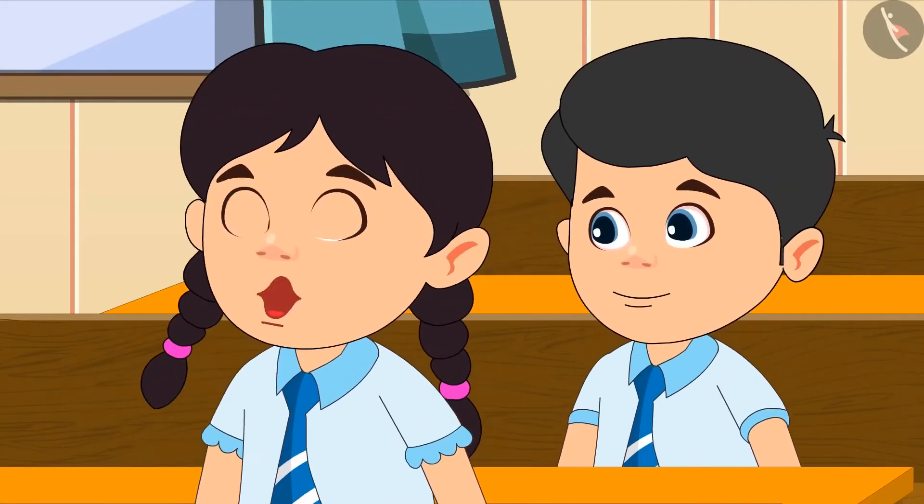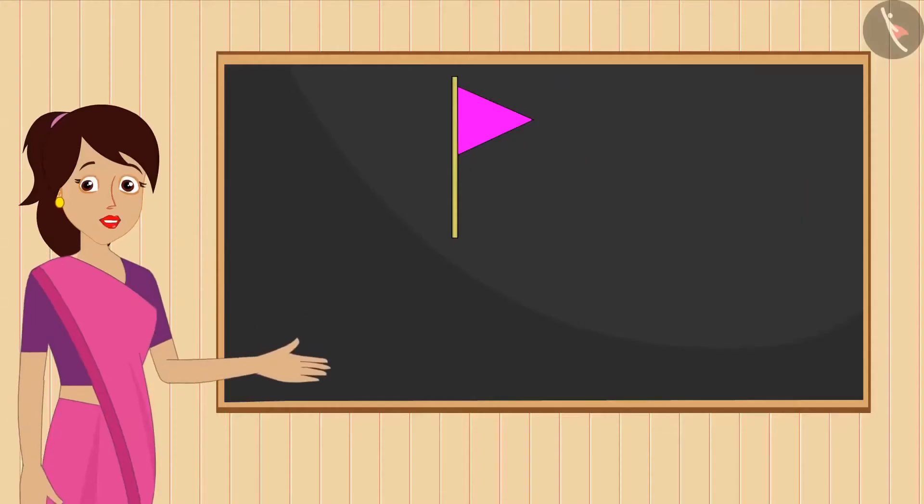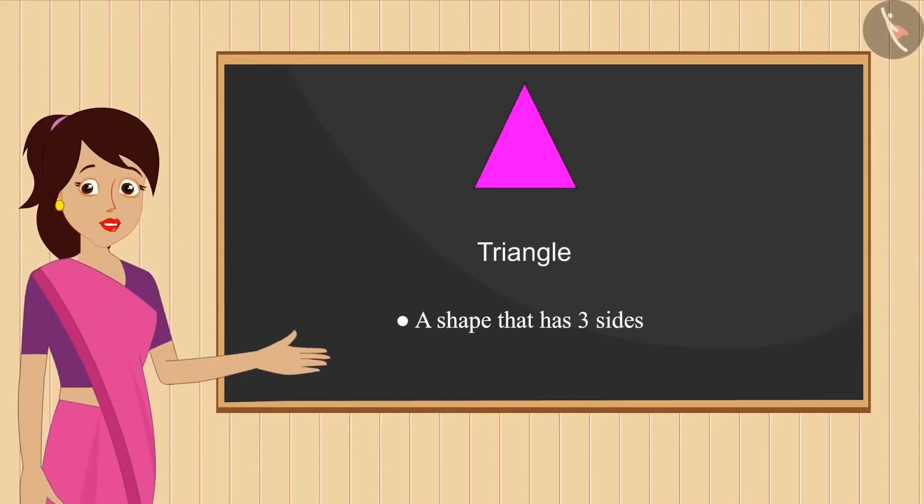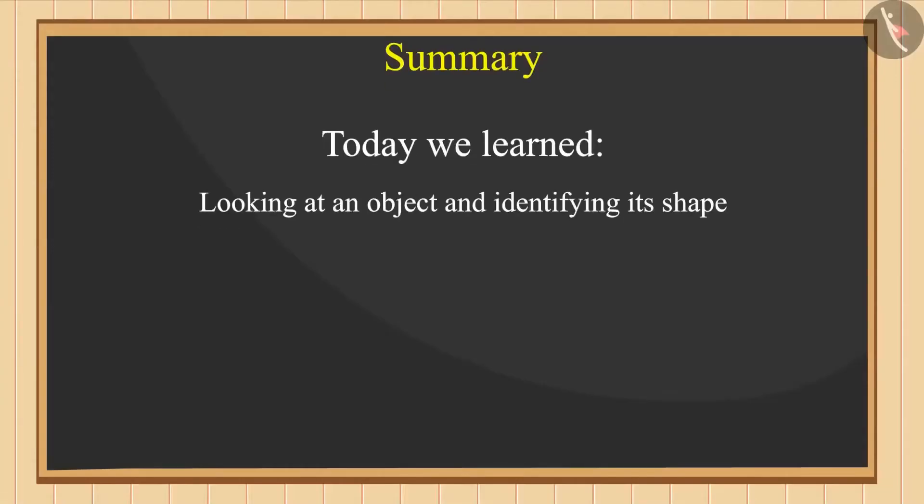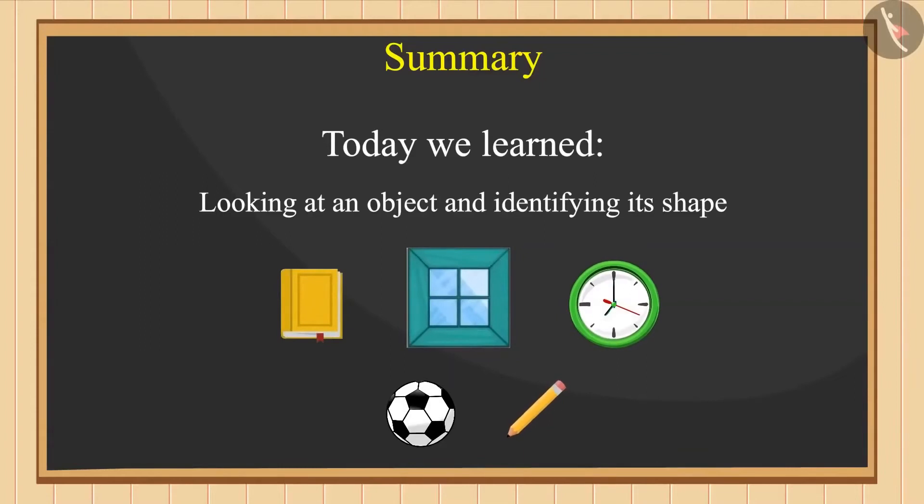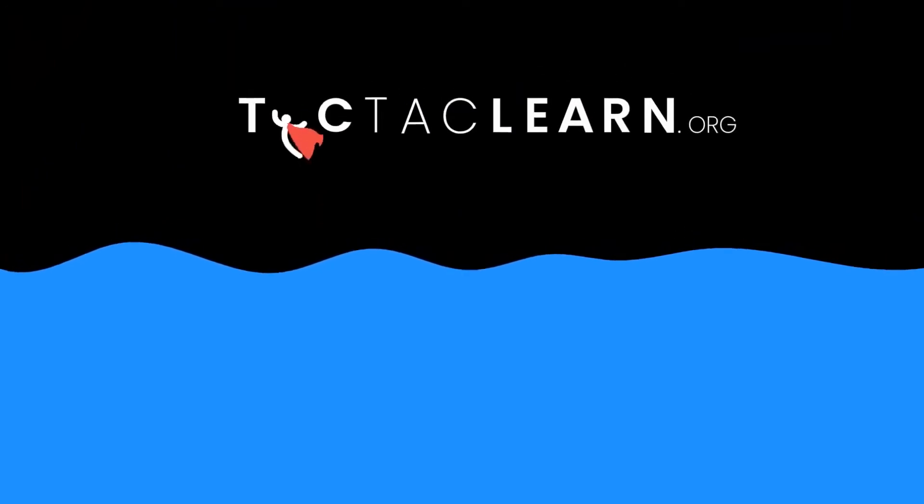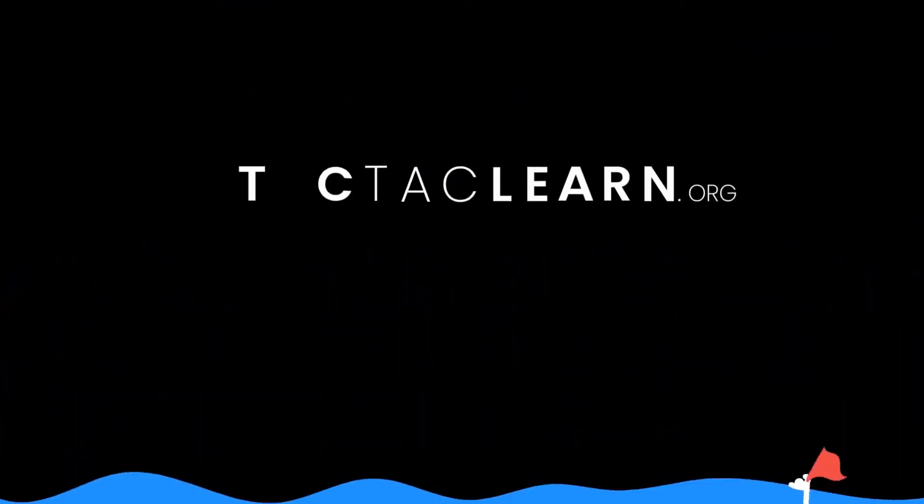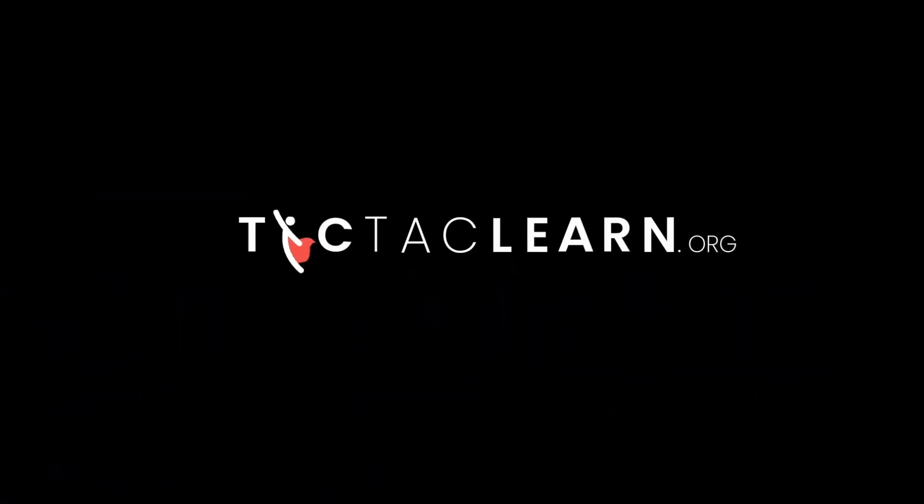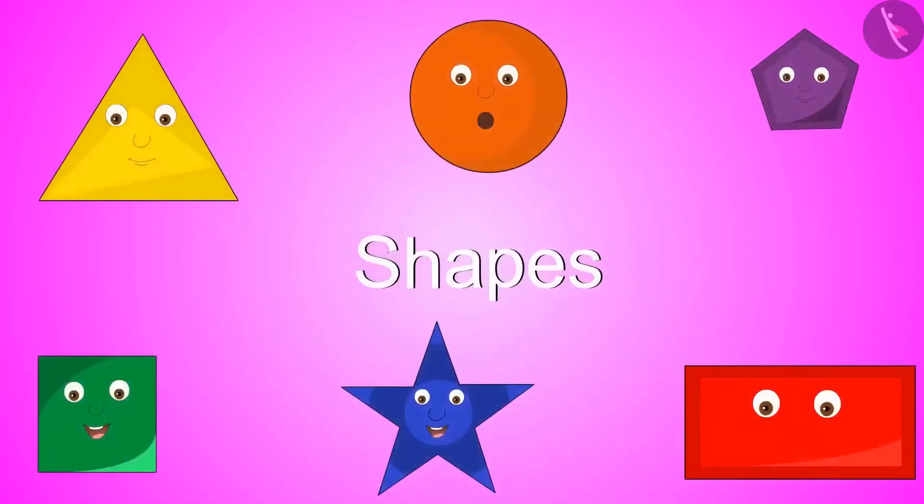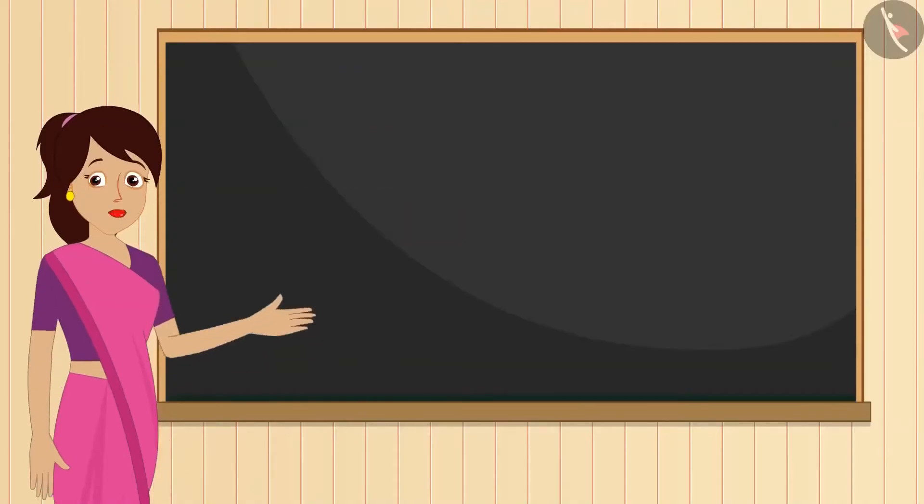Students, all of you must have seen such a flag. Yes teacher, I have seen such a flag in a fair. The shape of the cloth of this flag is like a triangle. You identified it right, Priya. Triangle is a shape that has three sides that are joined like this. Summary: so children, today we have learned that if we observe an object carefully, then we can easily identify its shape. Now all of you find shapes hidden in the objects at your home. Thank you!